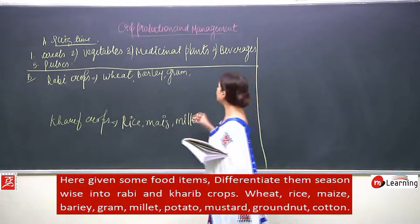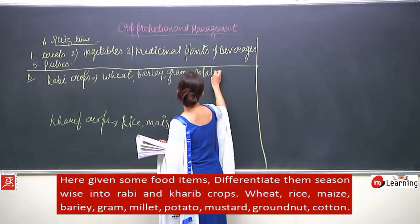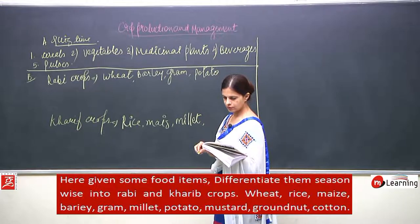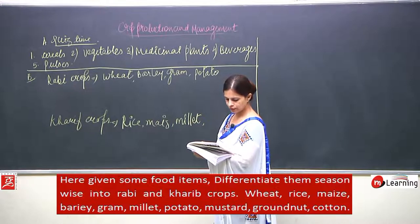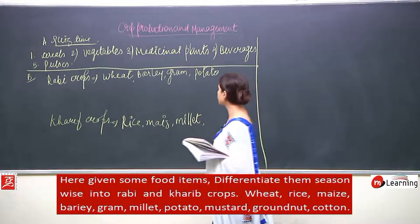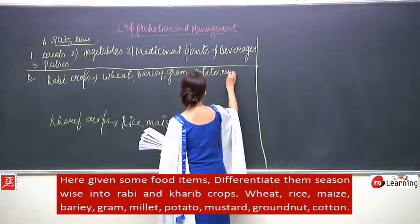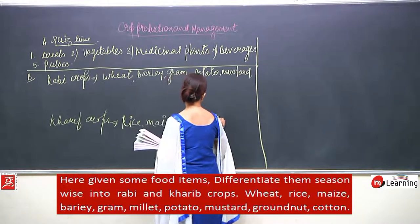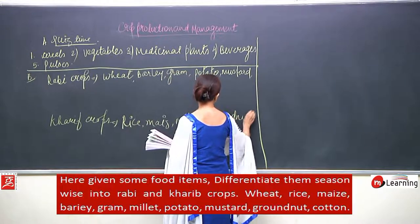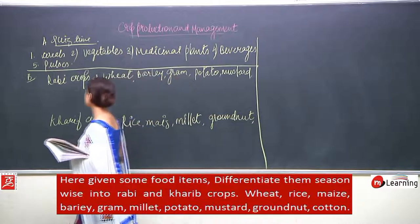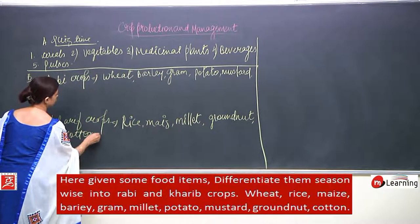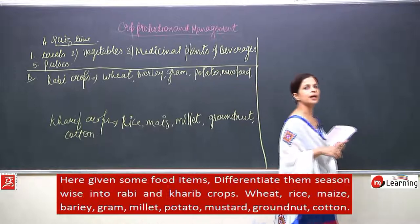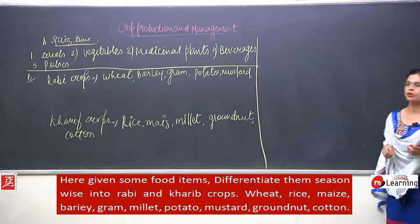Potato is a Rabi crop. Mustard is also a Rabi crop. Groundnut is a monsoon crop and cotton is also a monsoon crop. So that was the mixture of Rabi and Kharif crops which we were supposed to separate, and we did it.